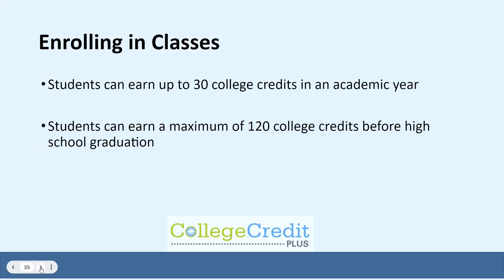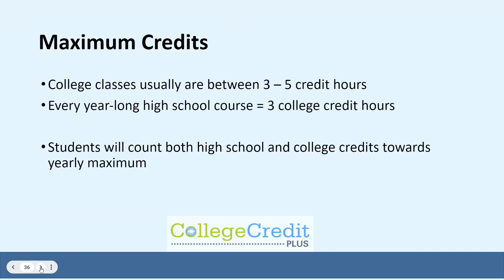While CCP is free, there are some limits. You can earn up to 30 college credits in an academic year, and that is summer, fall, and spring terms. You will also be limited to a lifetime maximum of 120 college credits between 7th and 12th grade. Many students will take a combination of high school and college classes, so there is a formula to determine how many college and high school classes you can take. A college class can range from 3 to 5 credit hours, and a year-long high school course is worth 3 college credit hours.